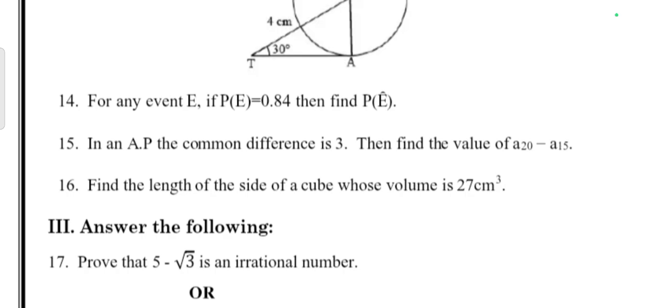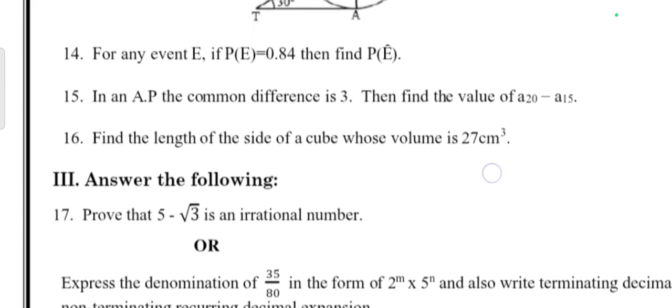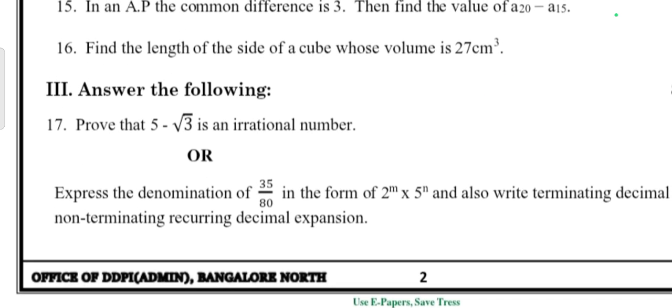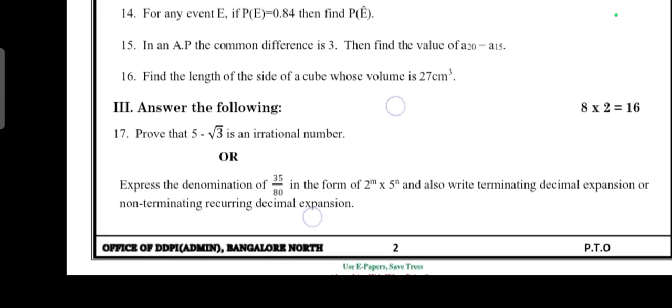In an AP, the common difference is 3. Find the value of a₂₀ - a₁₅. Then find the length of a side of a cube whose volume is 27 cubic centimeters. Next, third main: answer the following 2-mark questions, 8 questions.